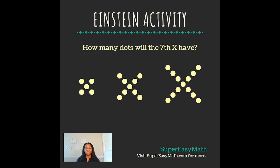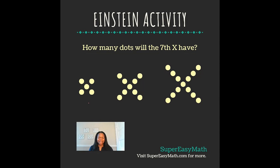Hey guys, it's Tiffany from Super Easy Math. Today's Einstein activity says, 'How many dots will the 7th X have?' Well, when they say 7th X, they're referring to the fact that these X's are gradually getting larger.